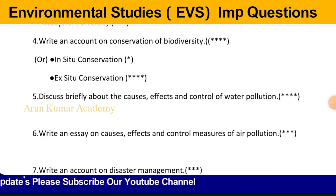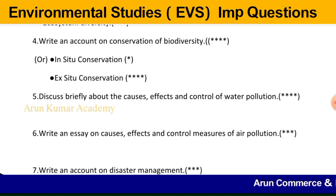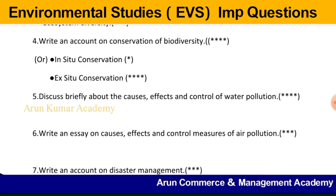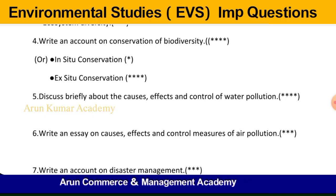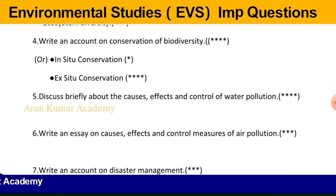Question number six: write an essay on causes, effects, and control measures of air pollution. Write what air pollution is and classify its sources — natural sources like volcanoes and forest fires, and anthropogenic (man-made) sources like burning of fuel, industrialization, mining, wars, and aircraft. Then explain the effects of air pollutants and measures to control air pollution in detail.